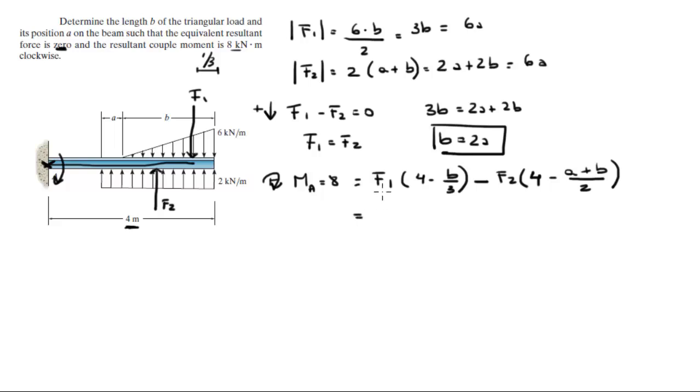So now we're going to start replacing F1 and F2 by 6A because we found that right here. So we get 6A times 4 minus B, we can replace by 2A because we got that right here, over 3, minus 6A times 4 minus 3A, because A plus B is equal to 3A using this equation right here, over 2, and this is all equal to 8.